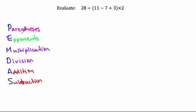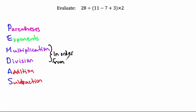Multiplication and division are written in the same color, as are addition and subtraction, and there's a reason for that. A common mistake is thinking multiplication has to come before division, or that addition must come before subtraction — but that's not the case. Multiplication and division are equal in order of operations, performed left to right. The same is true for addition and subtraction.